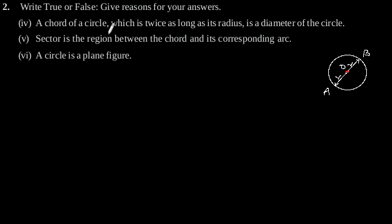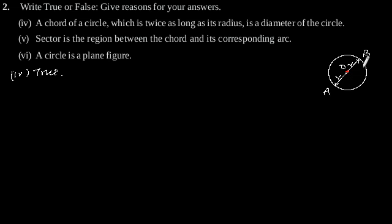Fourth: a chord of a circle which is twice as long as its radius is a diameter of a circle. This statement is true. To show this, consider a circle and let AB be a chord which is twice as long as its radius. We can observe that the chord AB will be passing through the center of the circle O; therefore it will be the diameter of a circle.